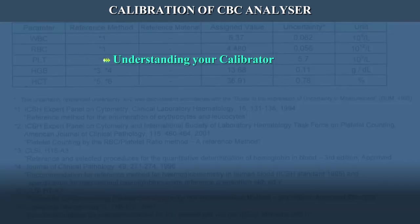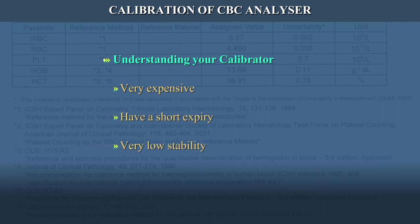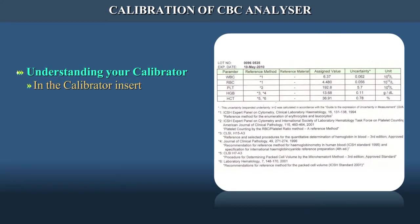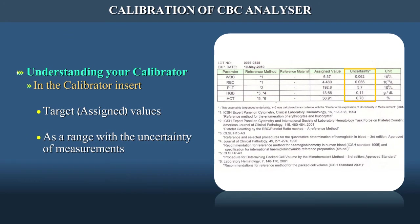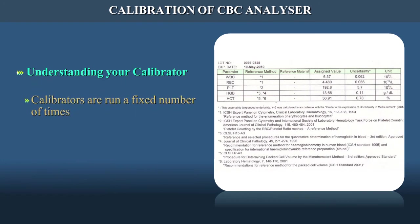Understanding your calibrator: calibrators are very expensive and have a short expiry and very low stability. Always ascertain traceability to ICSH. In the calibrator insert, you can find the target values, which are available as a range with uncertainty of measurements, or fixed as in 5-part calibrators. The calibrators are run a fixed number of times — minimum 5 — of which the first is discarded and the rest averaged.